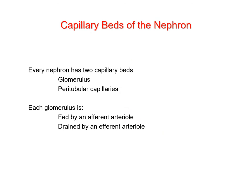Every nephron has two capillary beds: the glomerulus inside Bowman's capsule where filtration occurs, and the peritubular capillaries surrounding the tubular structures where reabsorption and secretion occur. Every glomerulus is fed by an afferent arteriole and drained by an efferent arteriole, which then leads to the peritubular capillaries — that second capillary bed.